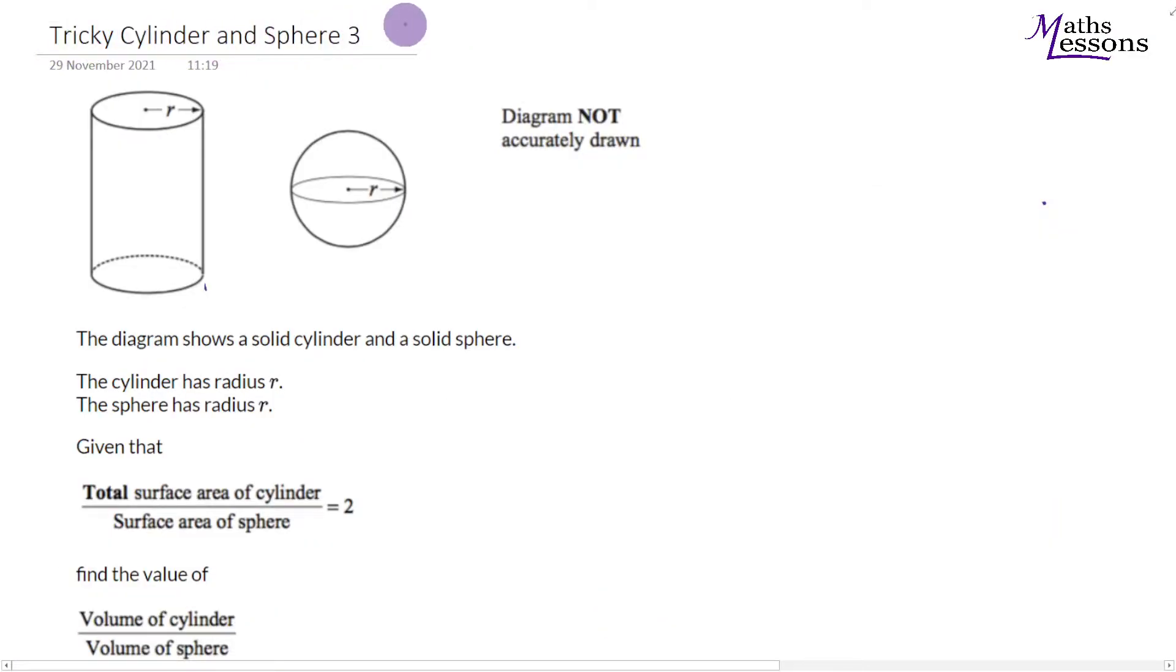Right, tricky cylinder and sphere problem three. The diagram shows a solid cylinder and a solid sphere. The cylinder has radius r, the sphere has radius r. Given that the total surface area of the cylinder over the surface area of the sphere equals two, find the value of the volume of the cylinder over the volume of the sphere.